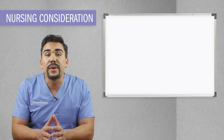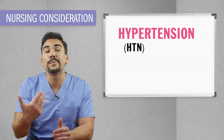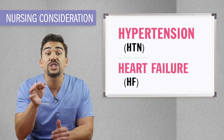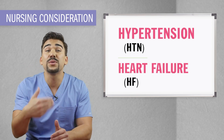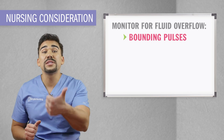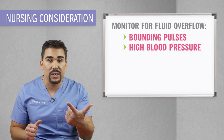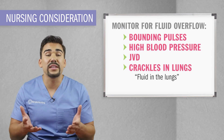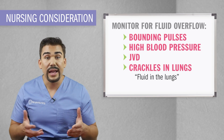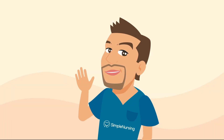Key nursing interventions when using isotonics: Since these fluids expand in the intravascular space, patients with hypertension or high blood pressure as well as heart failure should be carefully monitored for volume overload. Signs and symptoms include bounding pulses, high blood pressure, JVD — jugular vein distension — crackles in the lungs, and possible edema.